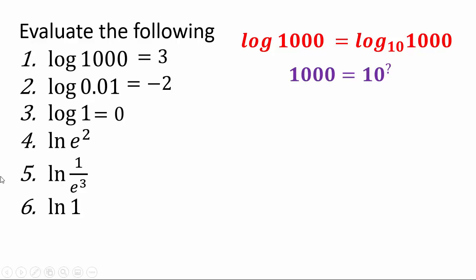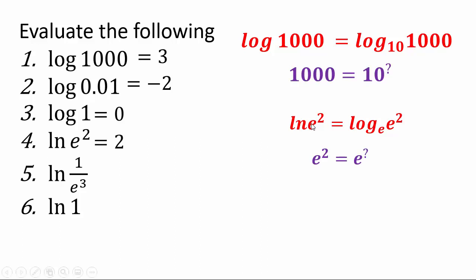ln means natural log, which is log base e. So you're asking: e to what power gives you e squared? That's 2. When you see ln of e squared, that means log base e, and e to what power gives e squared is 2. Natural log of 1 over e to the third is negative 3, because e to the negative 3 is 1 over e to the third. And natural log of 1 is 0, because e to the 0 power is 1. On your calculators you can also evaluate logs of numbers that are not just powers of 10 — for example, log of 1001 will be slightly above 3.